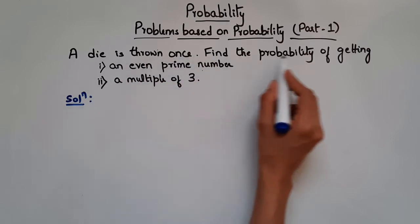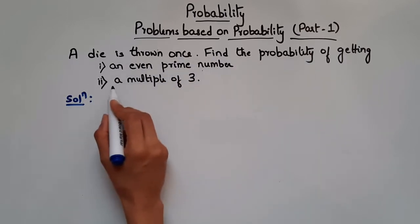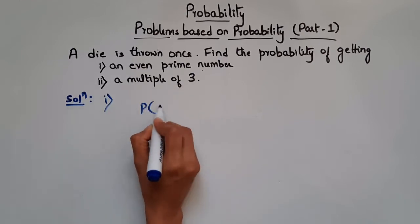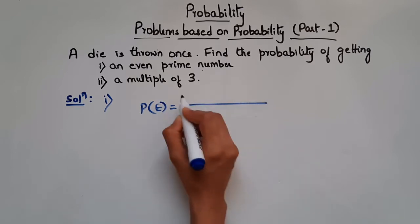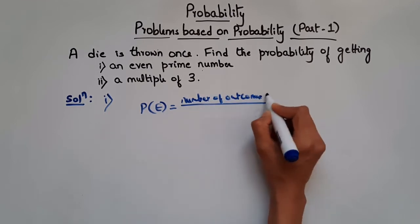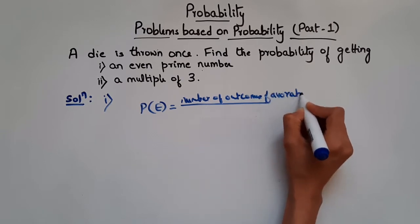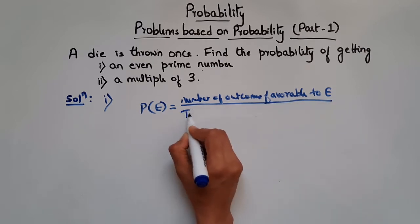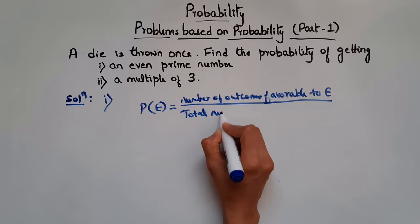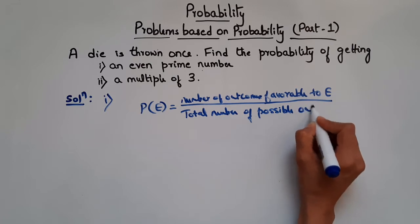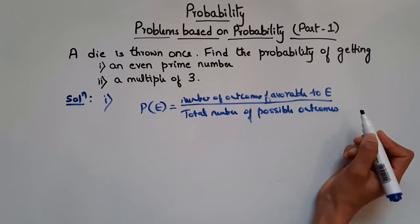A dice is thrown once. Find the probability of getting an even prime number, and also find the probability of getting a multiple of three. We know the probability formula: P of E is equal to the ratio of number of outcomes favorable to E by total number of possible outcomes.